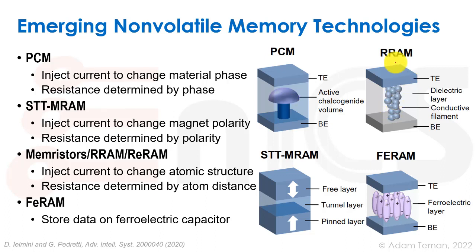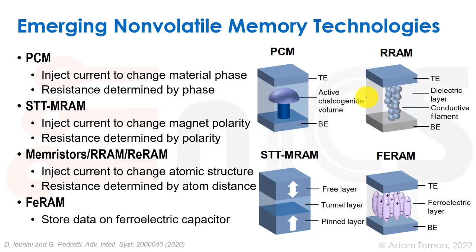The second type is RRAM (resistive RAM), which includes CBRAM (conductive bridge RAM) and OxRAM (oxide filament RAM). These have two electrodes with a dielectric layer between them; a conductive filament is created or removed to switch between high and low resistance states, encoding a 1 or a 0. Like PCM, RRAM supports multi-level cells and potential 3D stacking via via layers. It has also been shown as a candidate for in-memory computing applications such as dot products for neural networks and AI.